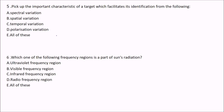Next question: pick up the important characteristic of a target which facilitates its identification. The options are spectral, spatial, temporal, polarization, and variation. The answer is E — all of these. Spectral, spatial, temporal, and polarization variations are all important characteristics of a target that facilitate identification of the object.